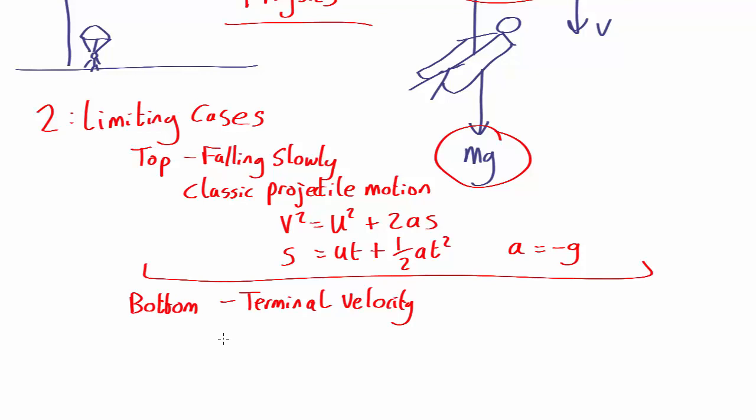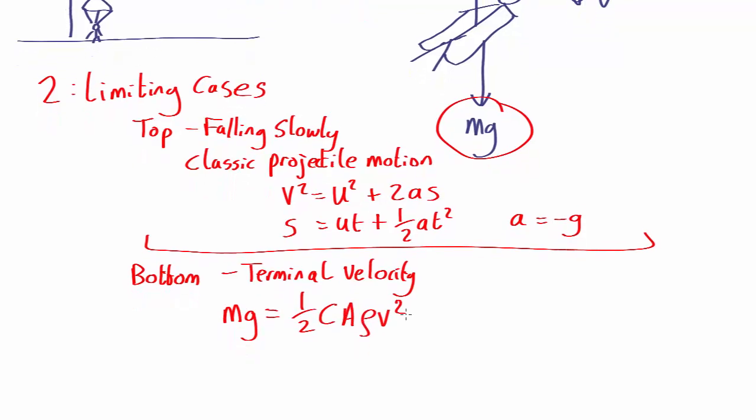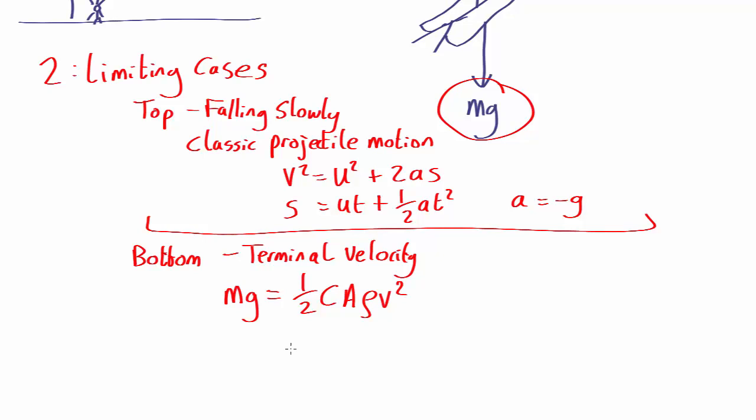So what you'll know then is that the downward force mg equals the upward force, which is 1/2 C A ρ v². If you rearrange that, you get v = √(2mg / CAρ), which for a base jumper turns out to be about 60 kilometers per hour.